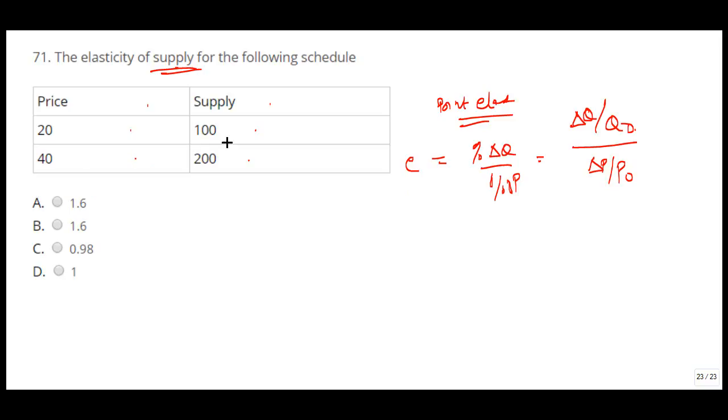So what is the change in the quantity? It is plus 100. What is the change in the price? It is plus 20. So your elasticity is 100 divided by initial quantity 100, over 20 divided by initial price 20. So it will be 1. The elasticity of supply is equal to 1.